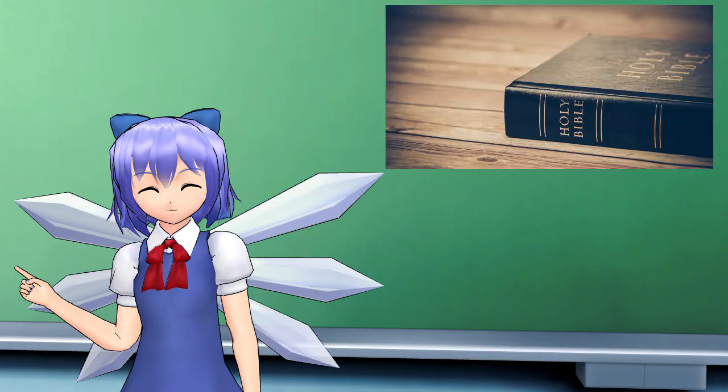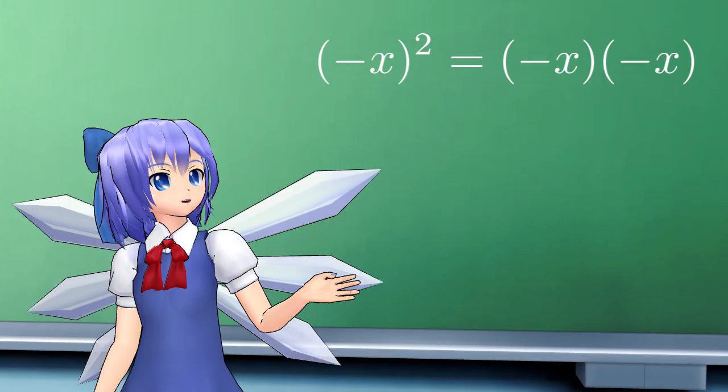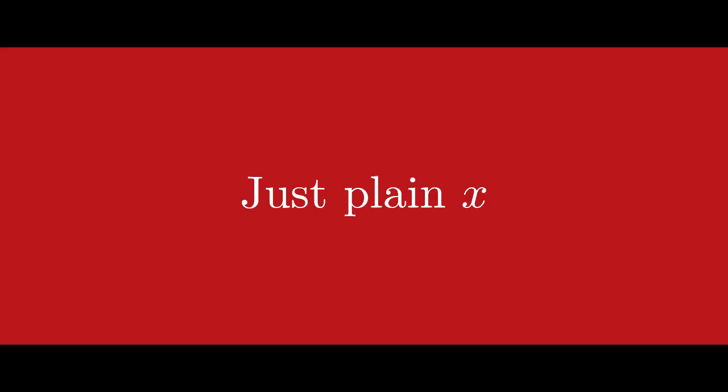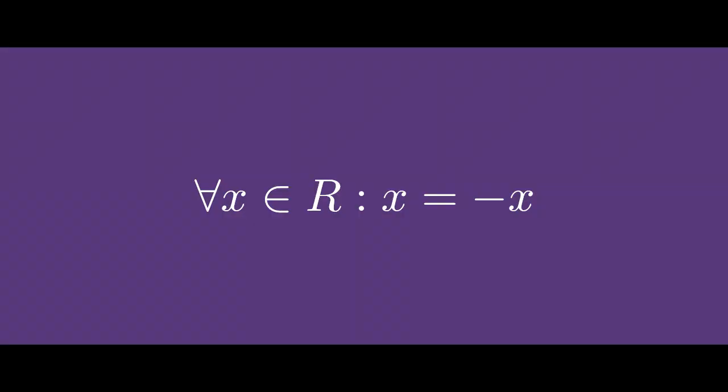But from the ring axioms, you should know that minus x squared is minus x times minus x. And since the minus signs cancel out, you get that it equals x squared, which equals x. So in a boolean ring, all elements equal their additive inverses.